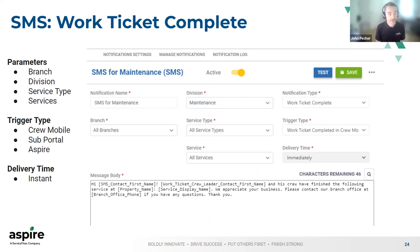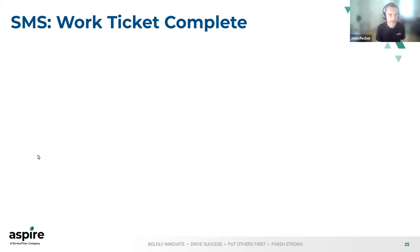When it comes to SMS, things are a little bit different. You have some similar parameters — obviously no reply-to override because there is no reply to, as these are unmonitored phone numbers. The same kind of division, service type, service breakdown, same trigger type — you can trigger based off Crew Mobile complete, Subportal complete, or Aspire complete. There is also a character limit — we're limited to how many characters we can use. These are typically more brief, but there are a number of different tokens you can use here as well.